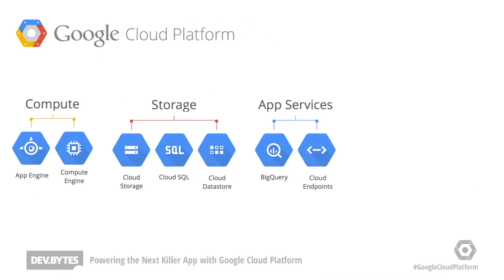What is the Google Cloud Platform? Well, in brief, it's a collection of services organized into three categories: Compute, Storage, and Application Services to help your app scale. Pick and choose which services you want and only pay for the resources you use.